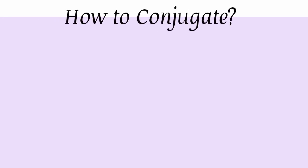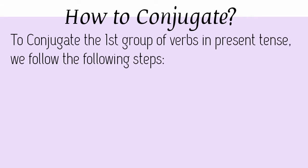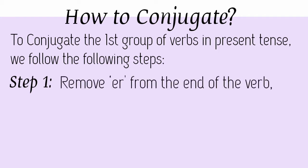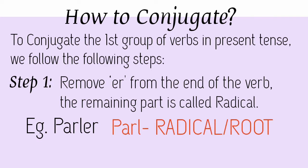So now let's come to the conjugation part. How do we conjugate ER ending verbs? To conjugate the first group of verbs in present tense, we follow these steps. Step one: we have to remove the ER at the end of the main verb. The remaining part is called the radical. For example, the verb parler — if we remove ER, 'parl' remains and this is called the radical or root.